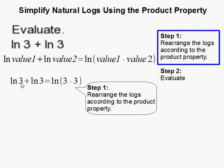So that's what I did. I had natural log of 3 plus natural log of 3. According to the property, what I can do is just say 3 times 3 in here, turn it into one natural log.